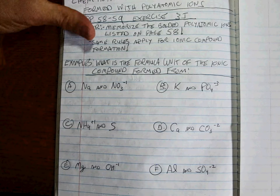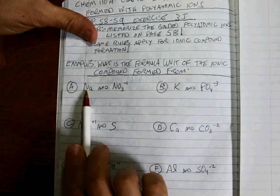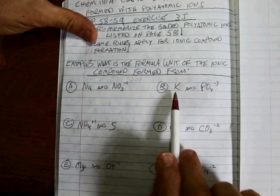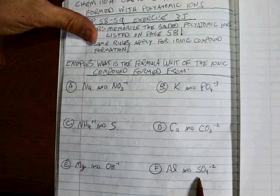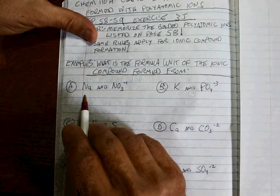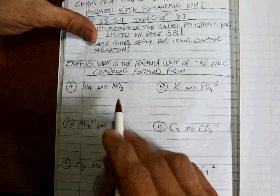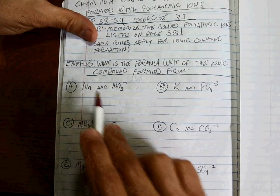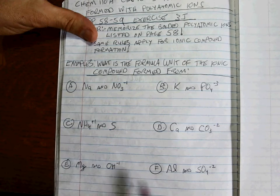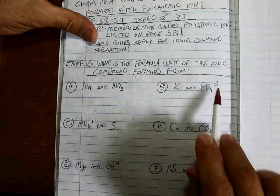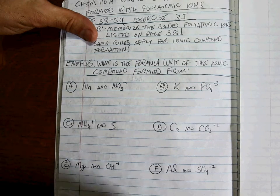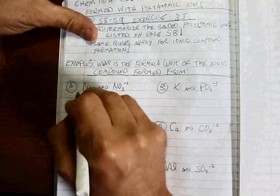We're back. As always, you have a cation and an anion — the cation will always be first and the anion will always be second: cation, anion. You have to be able to know what the charges are on anything that's a Group A element, and once you have the charges on the polyatomic ions, it should be pretty easy to put them together.